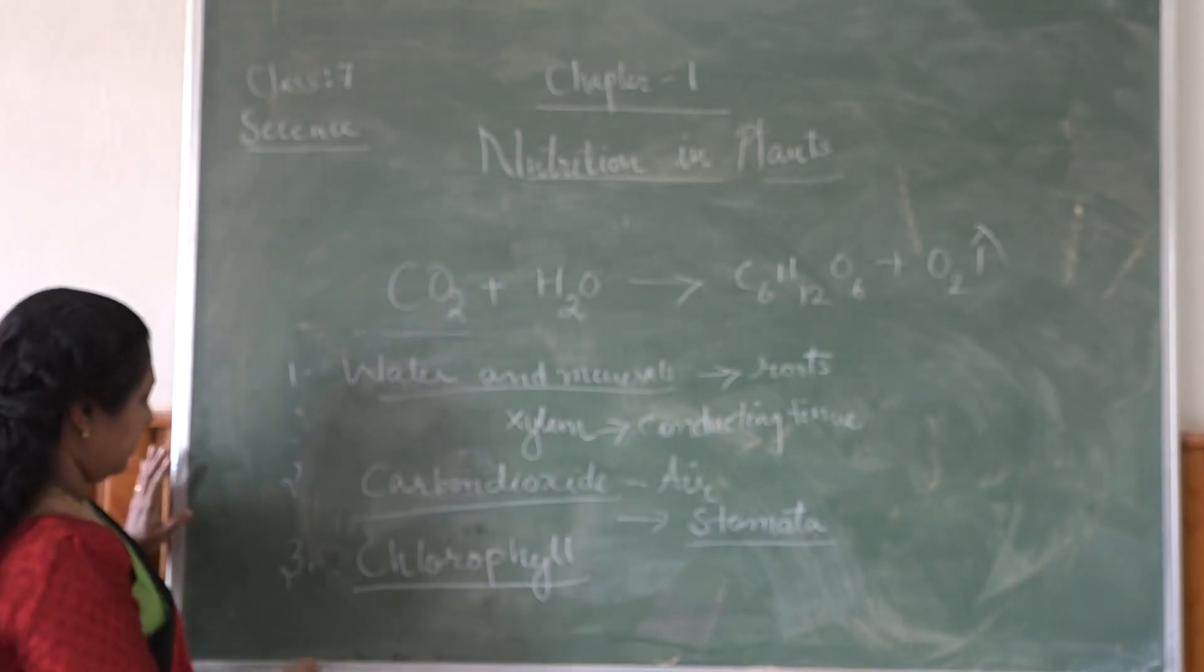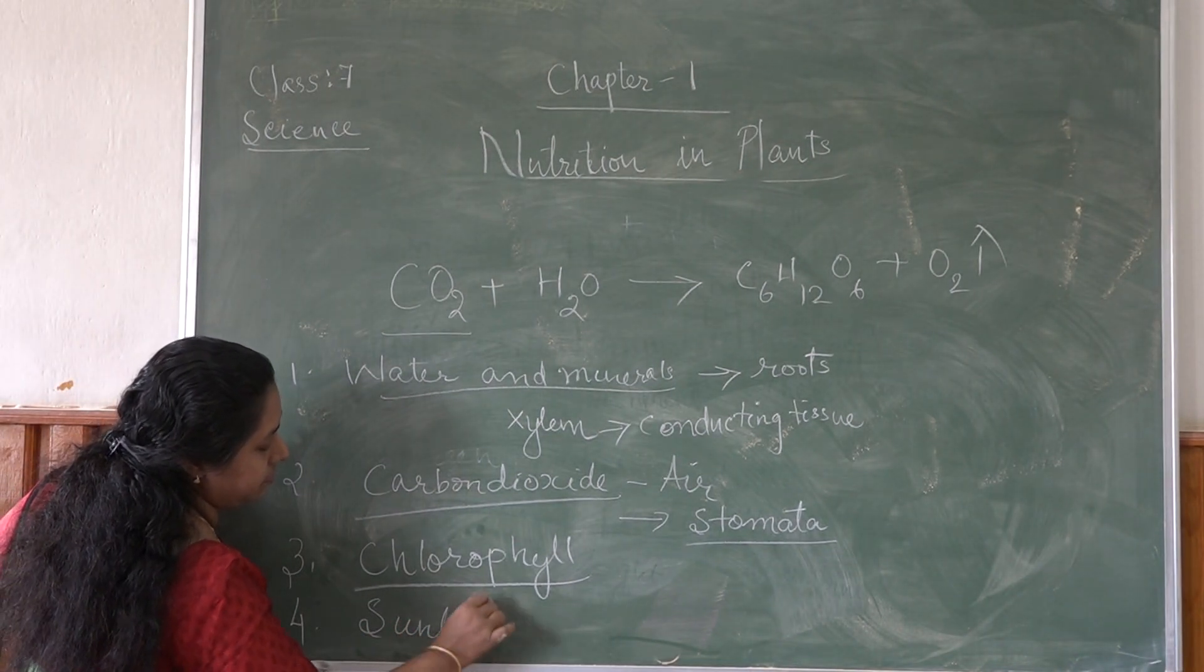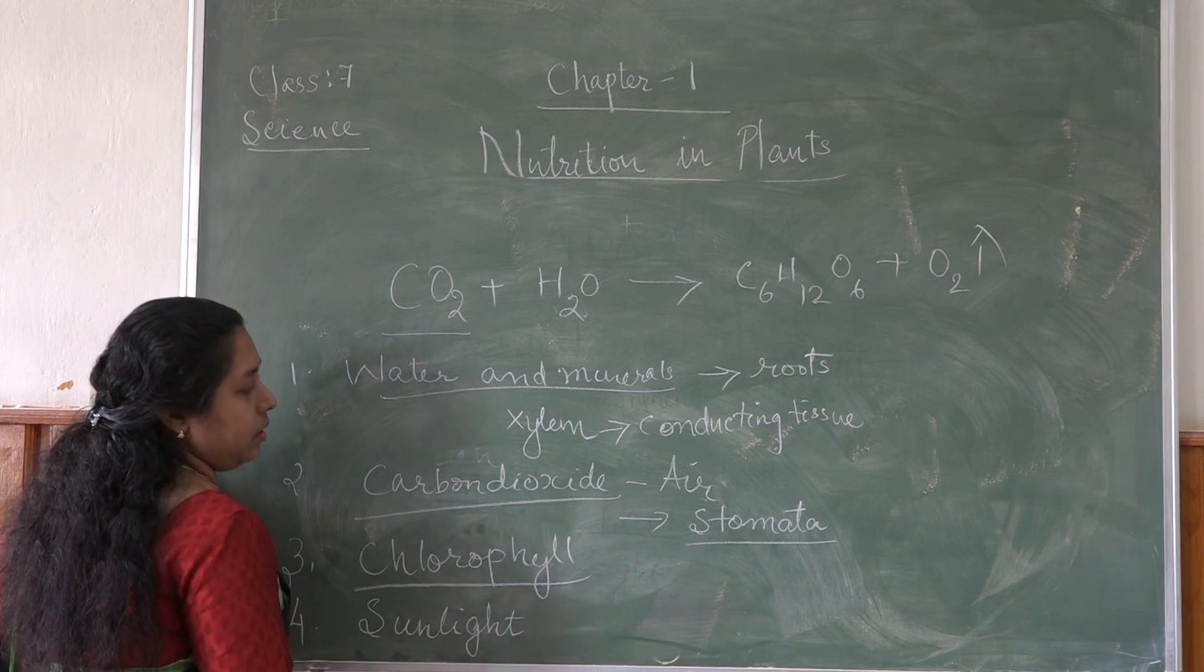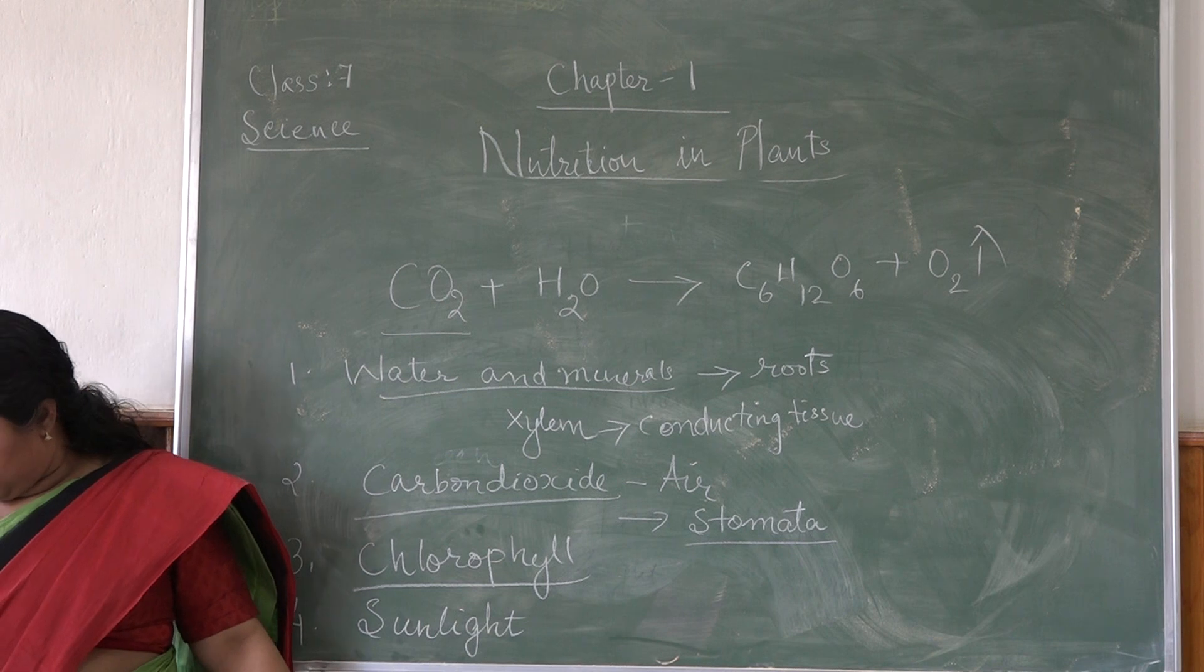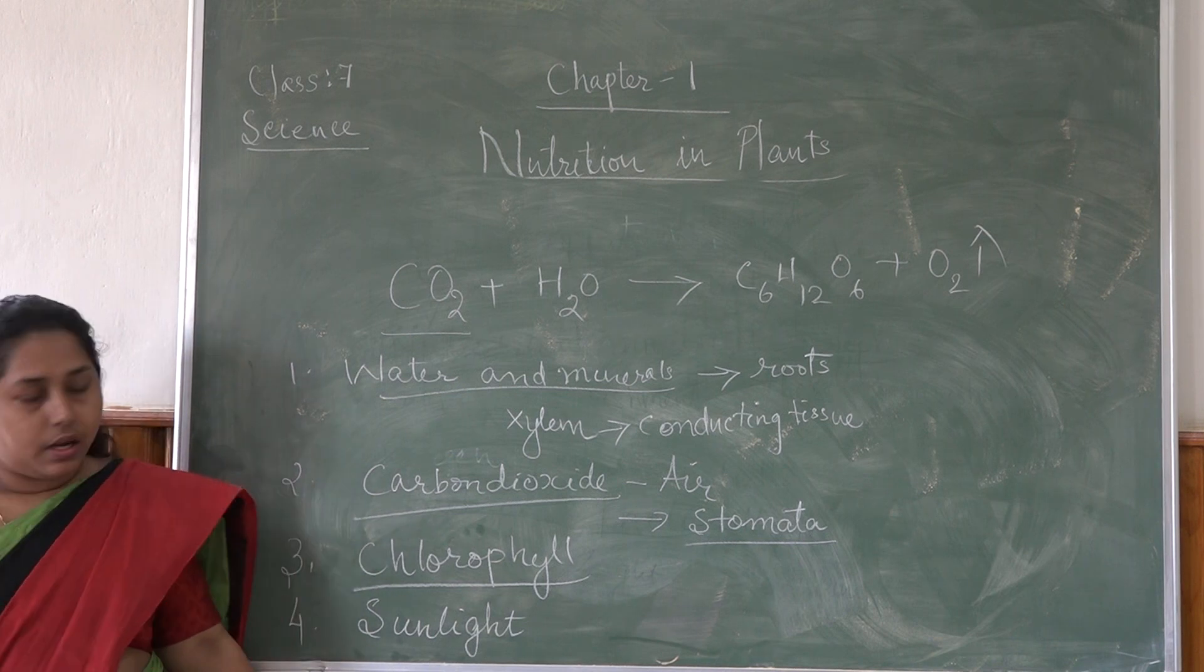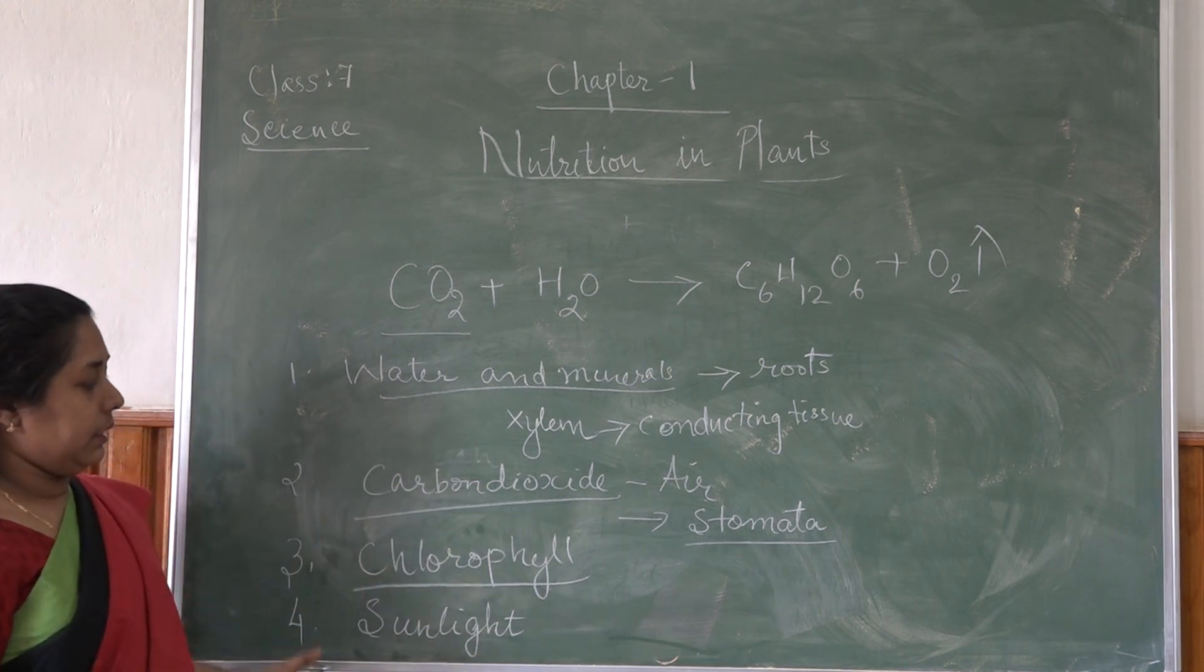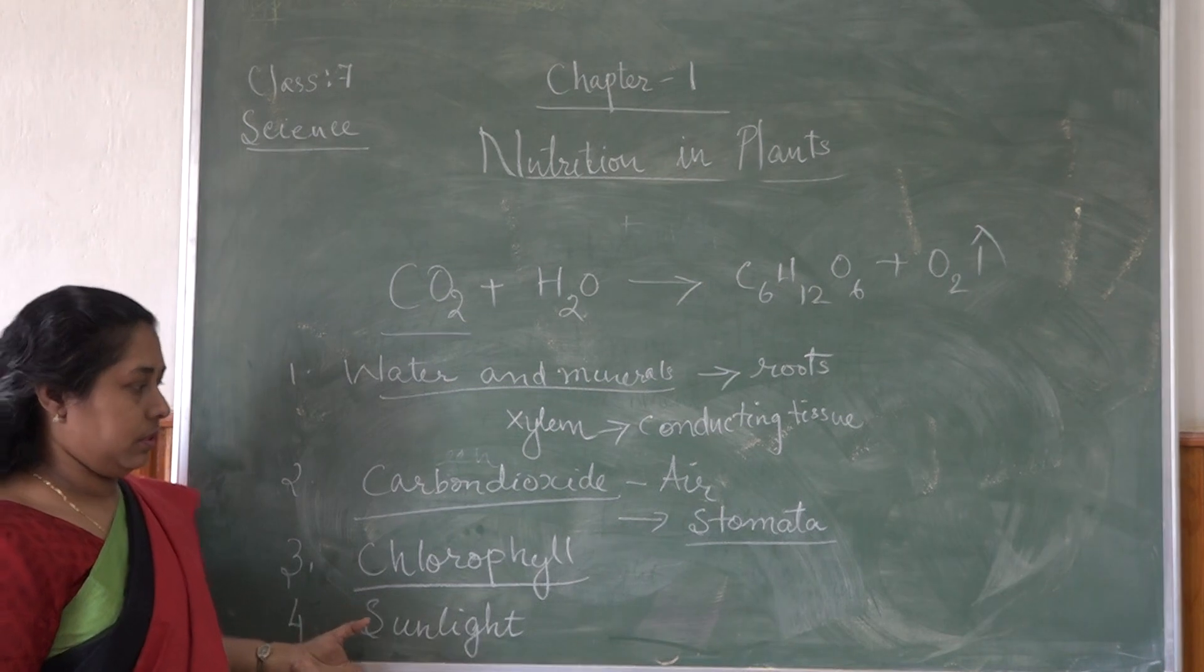Then fourth important thing is sunlight. Sun is the main source of energy. So these are the four materials required by the plants to conduct photosynthesis.